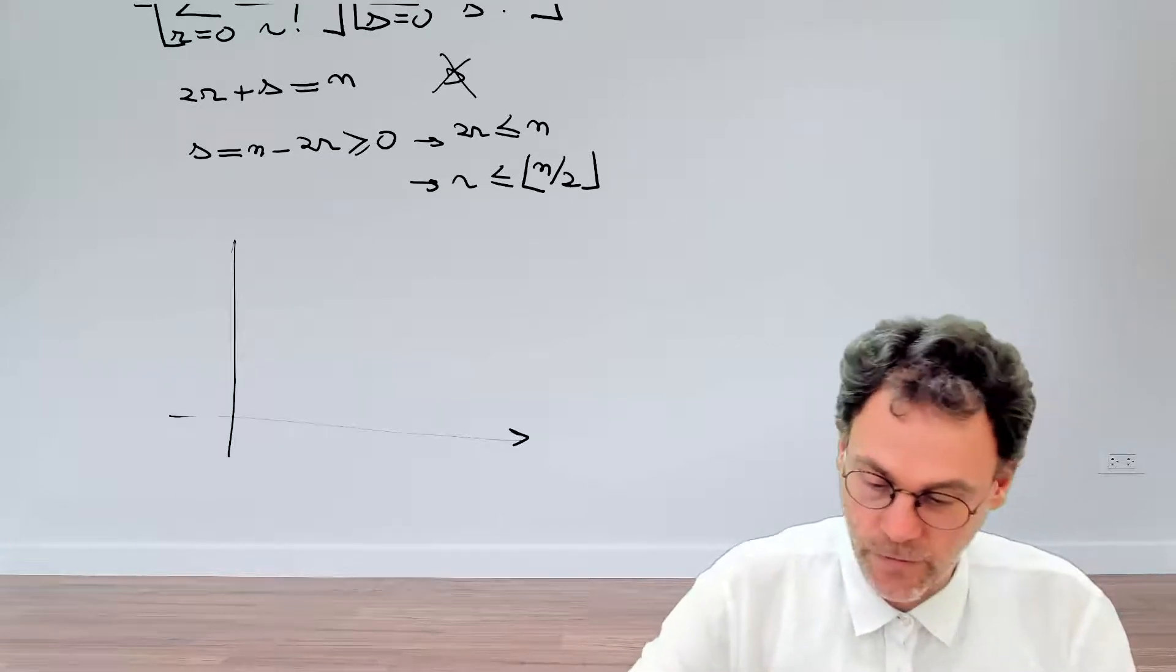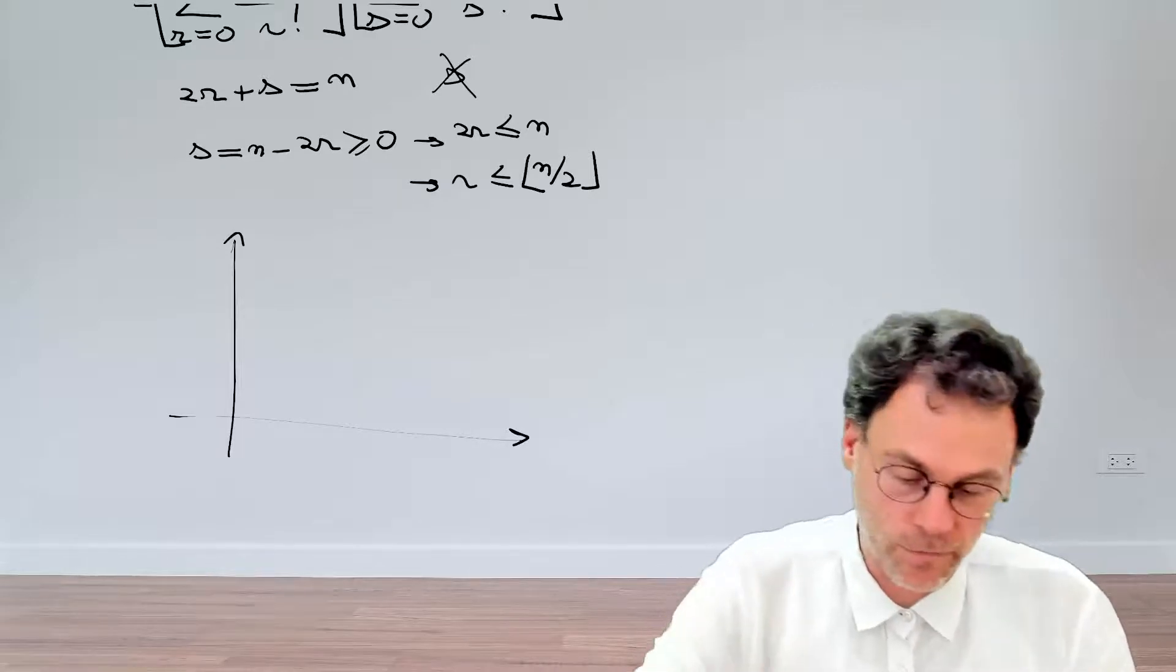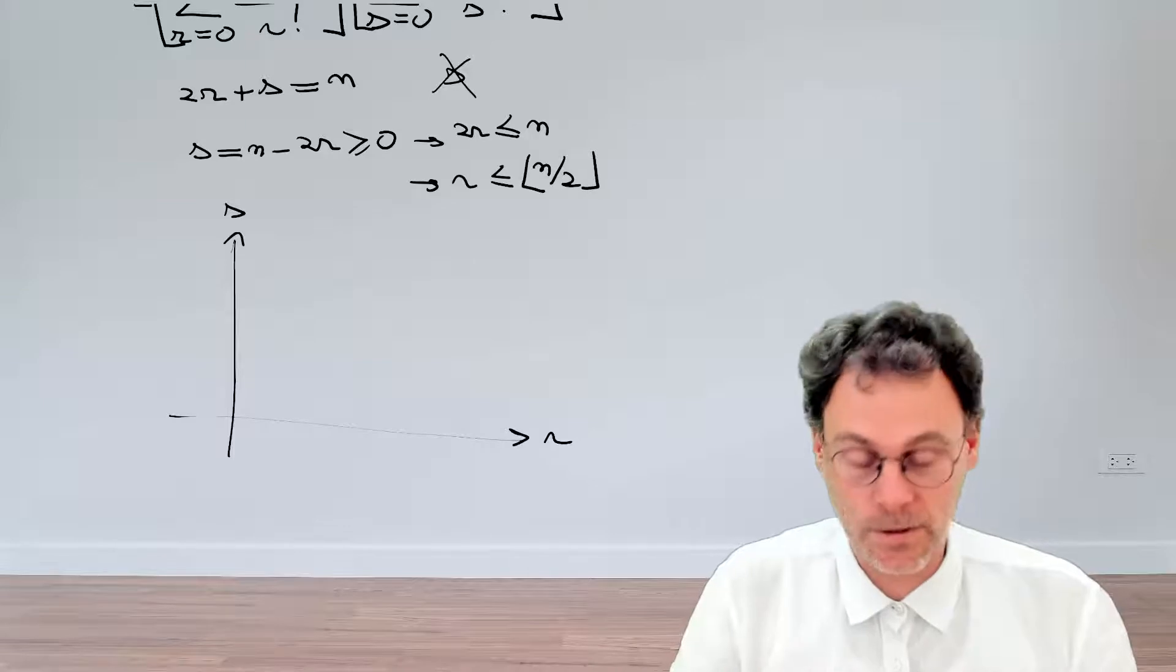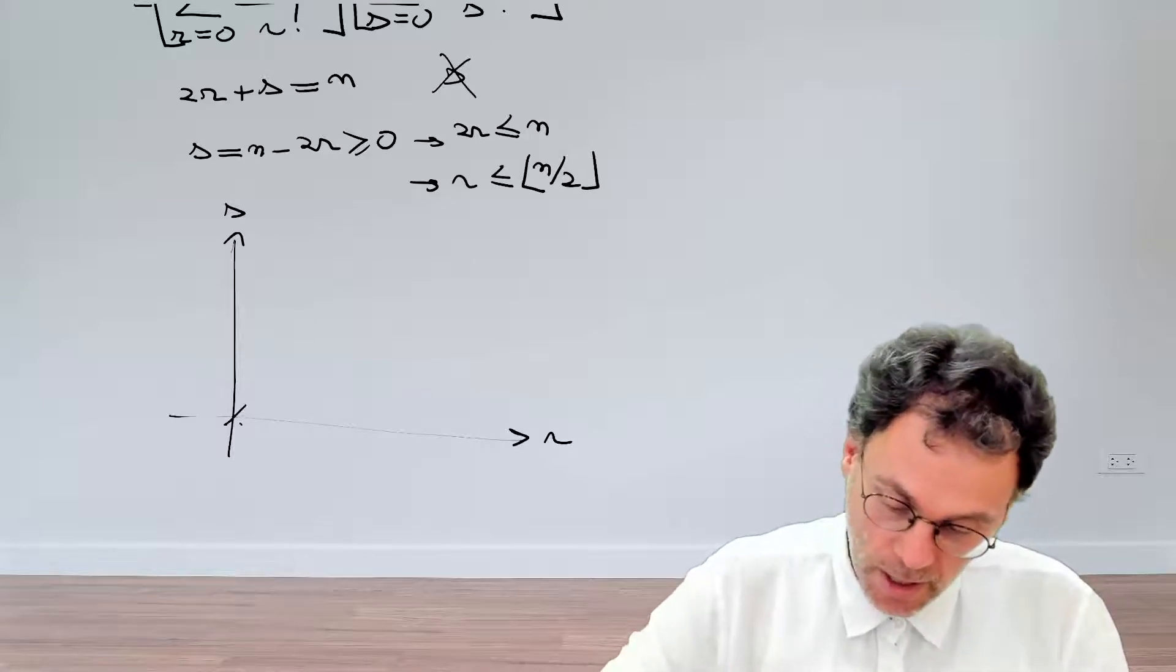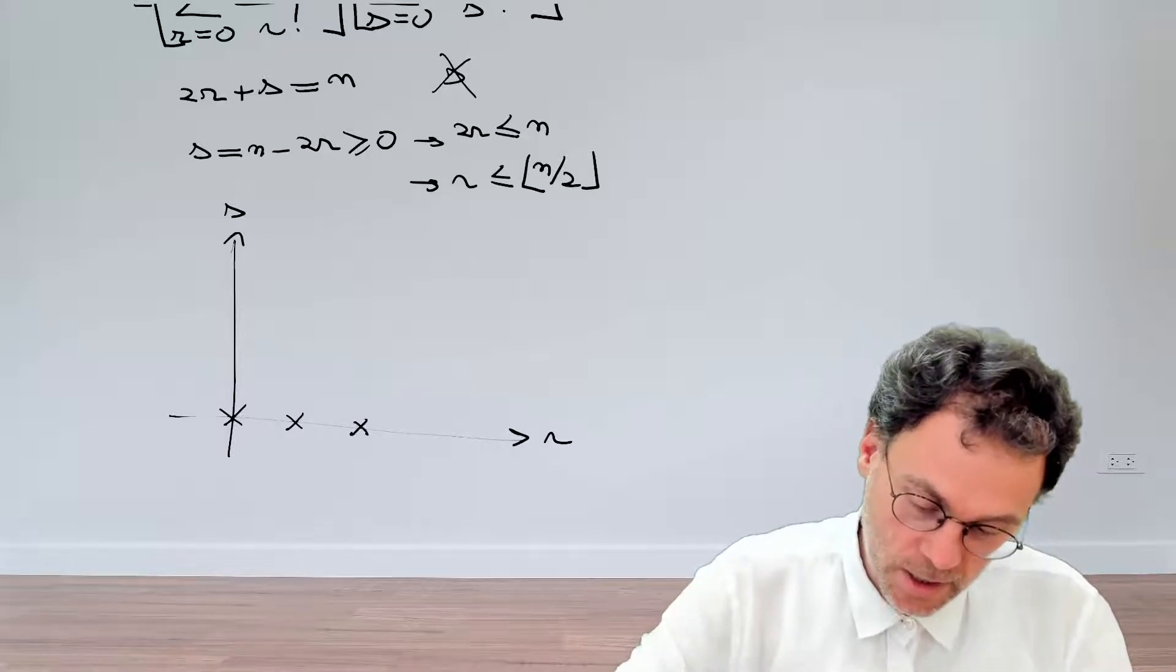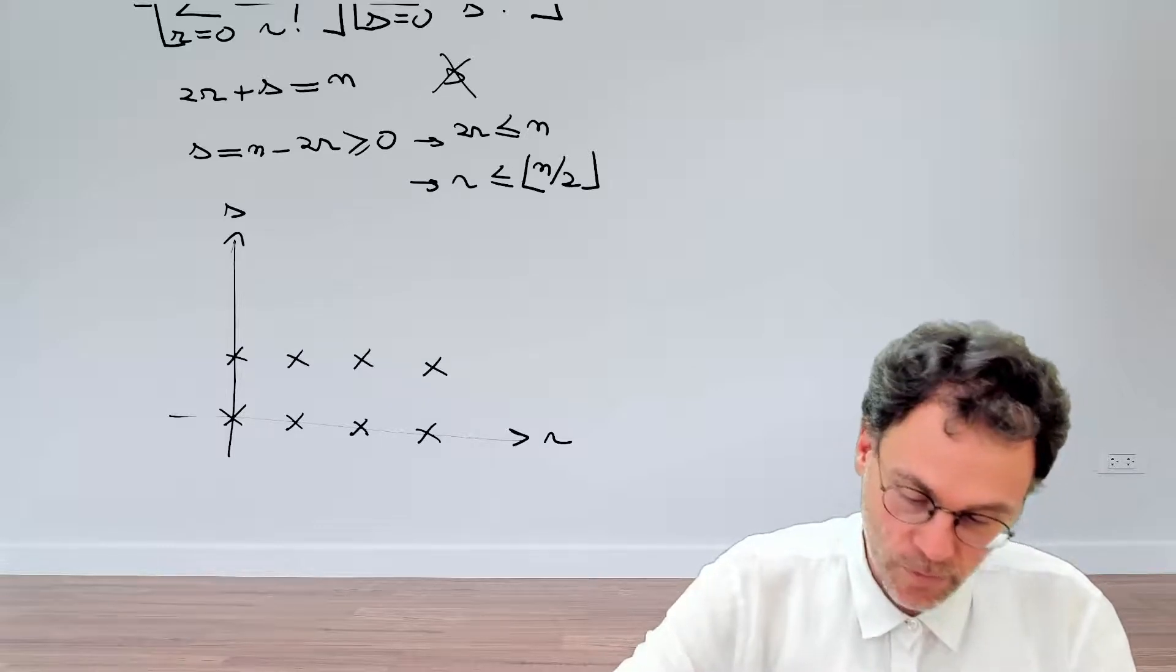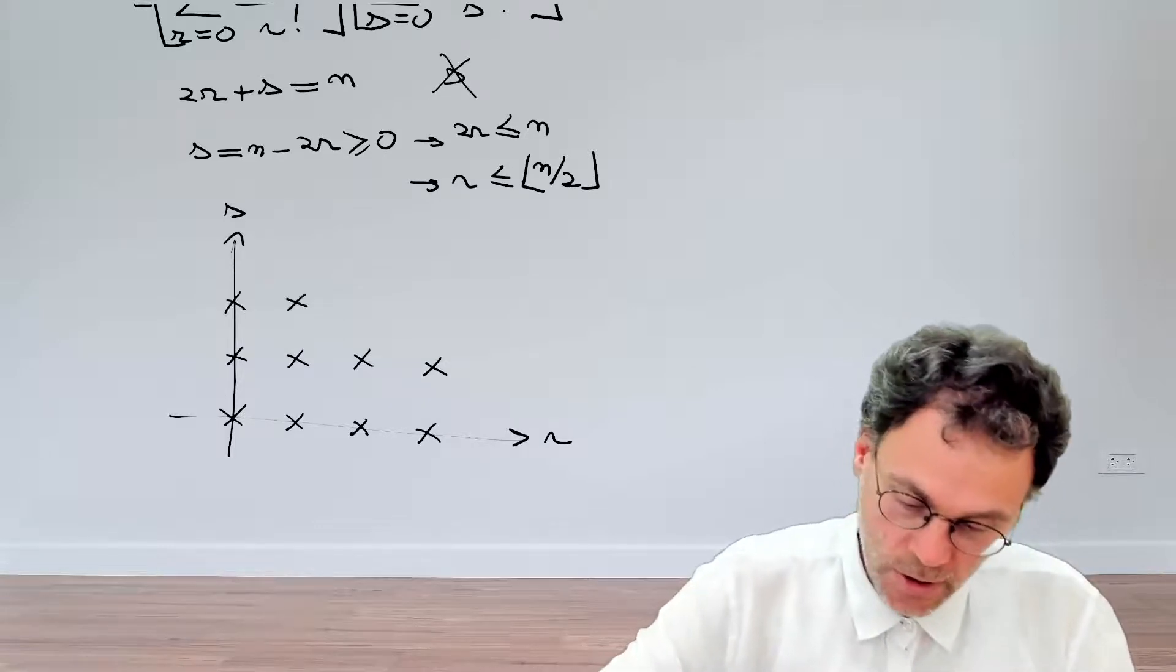Again, have a look at previous videos if you want a reminder of where this thing is coming from. So we have our two summation indices, r and s. And each of the crosses in that diagram over here corresponds to one term in the products of our series expansion.